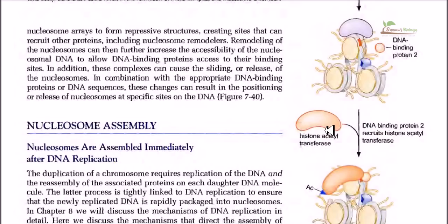The region finally becomes accessible to the protein of our interest, which is called histone acetyltransferase. This protein, as we have discussed before, acetylates the N-terminal tails of the nucleosome histones. As a result, the DNA can be loosened out from the histone octamer structure, and it can then be transcribed, replicated, and all these downstream processes can happen.